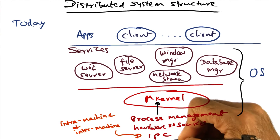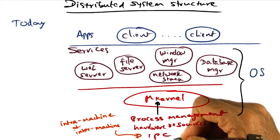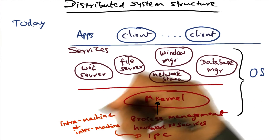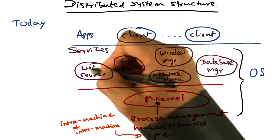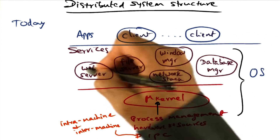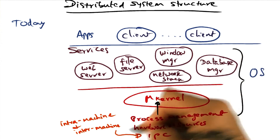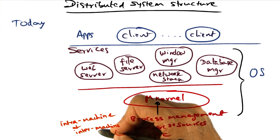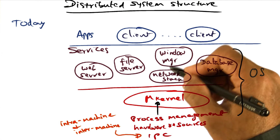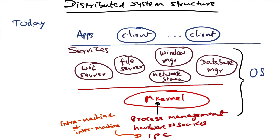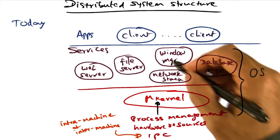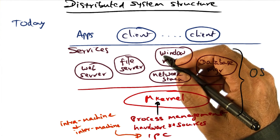and providing inter-process communication, both intra-machine among these services, as well as inter-machine through the network stack to remote machines on the local area network.